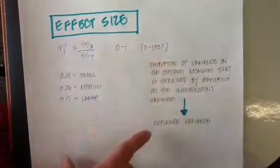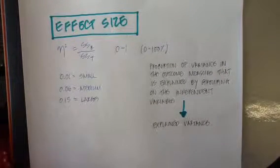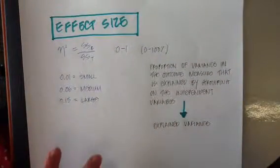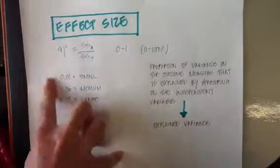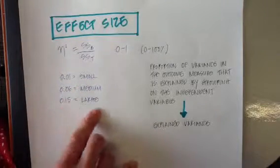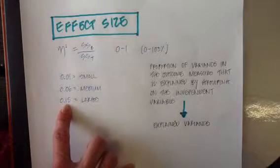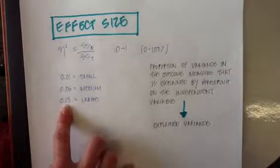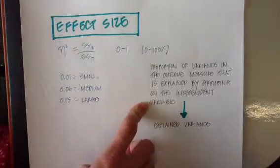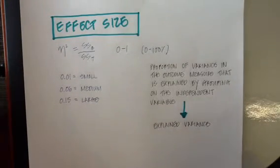Eta squared represents between 0 and 100% of explained variance. The standards offered by Abbott for effect size are: 0.01 is small, 0.06 is medium, and 0.15 is large. So 15% of the total variance in college readiness would be explained by the grouping on our independent variable — which foreign language, if any, was taken in high school. As always, if you have questions, please let me know. Thank you.